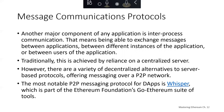Another type of decentralized capability is decentralized message communication protocols. A major component of any application is inter-process communication — exchanging messages between applications, between different instances of an application, or between users. Traditionally this is achieved through a centralized server. However, there are decentralized alternatives offering messaging over a peer-to-peer network. The most notable Ethereum Foundation peer-to-peer messaging protocol for dApps is Whisper, which is part of the Ethereum Foundation's GoEthereum suite of tools.